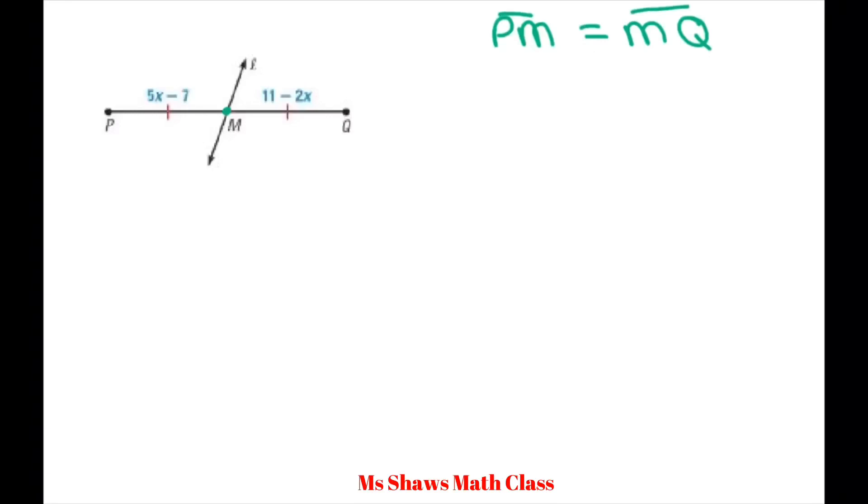PM should equal MQ with M being the midpoint. So we have 5X minus 7 equals 11 minus 2X. I'm going to take two steps: I'm going to add 2X to both sides and add 7 to both sides.